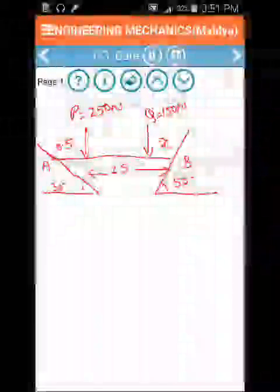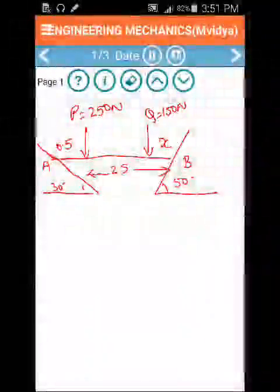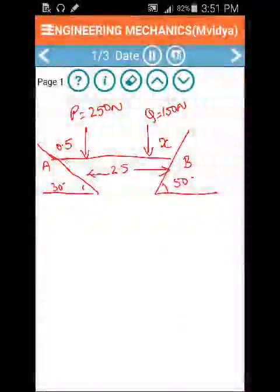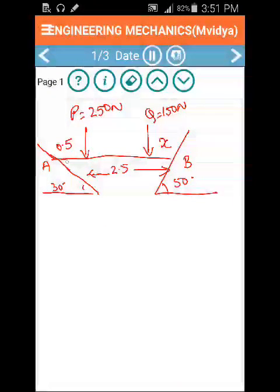We have to find for this beam of length AB the distance x from which the force Q should be acting such that the beam AB is horizontal.